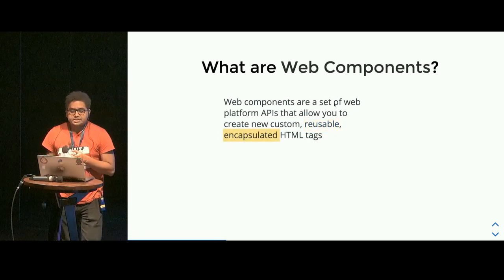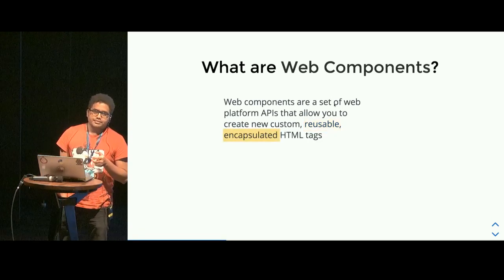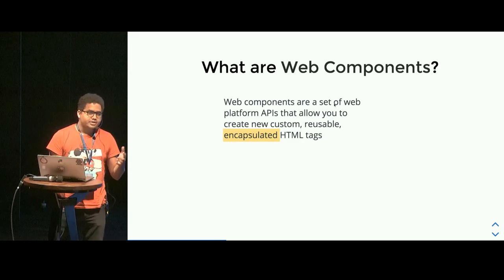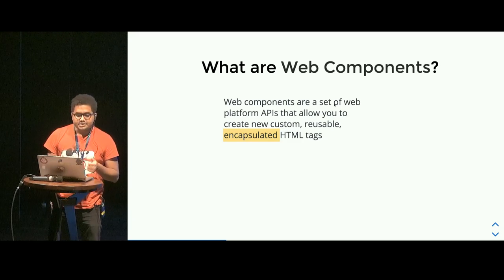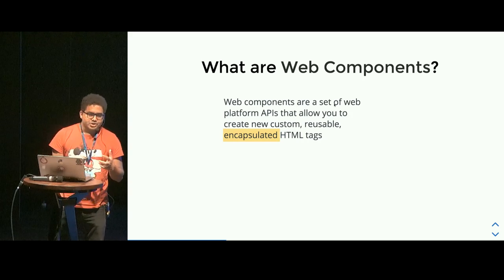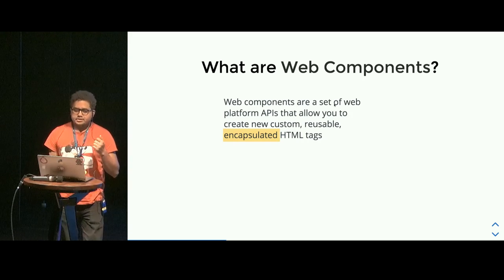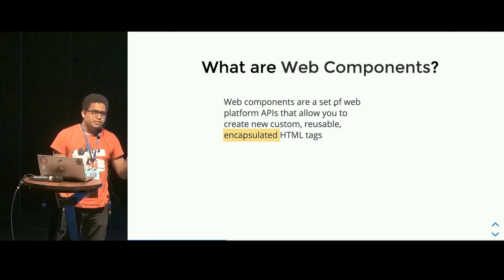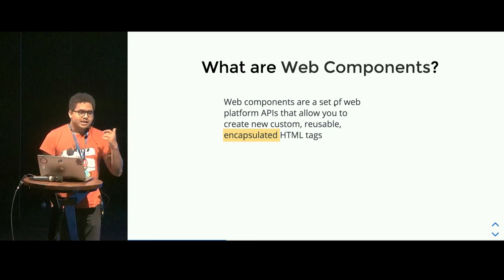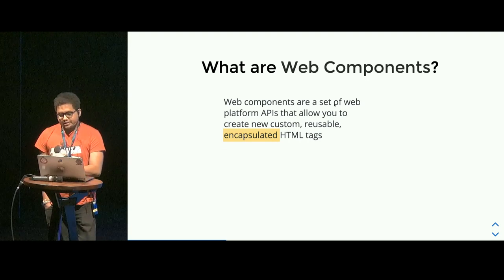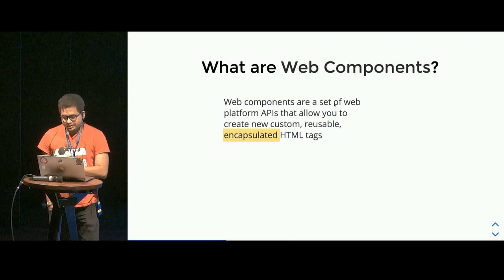Encapsulation — this is really interesting. Web components use something called Shadow DOM. What it enables us to do is encapsulate all your styles within a tag. So no matter where you are using it, the parent style will not interfere with the component style. That's what it does.